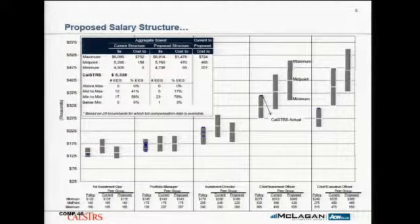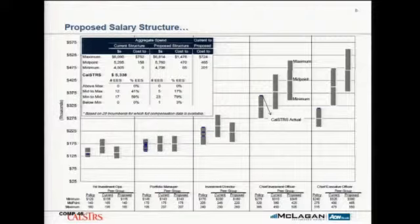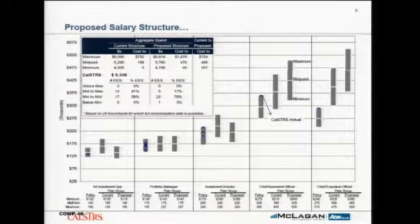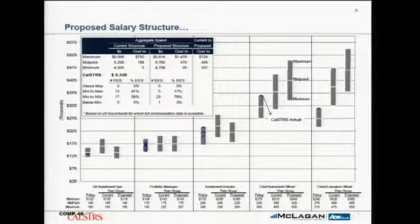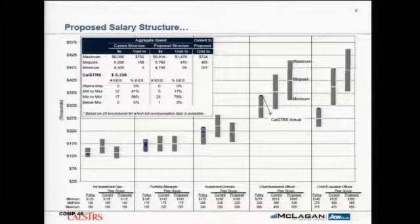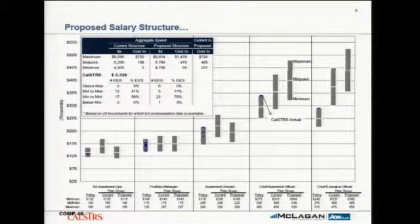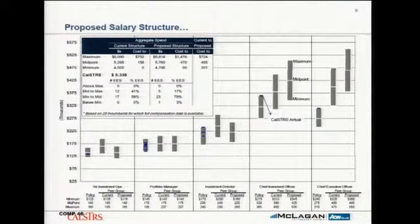What sits next to that is what the salary ranges would be if you haven't done this market analysis in three or four years and you don't change the peer group — if you just continued with your current peer group, this shows what the ranges should be consistent with your pay philosophy. And then the third set of floating bars shows the salary ranges at the low quartile of the proposed peer group.